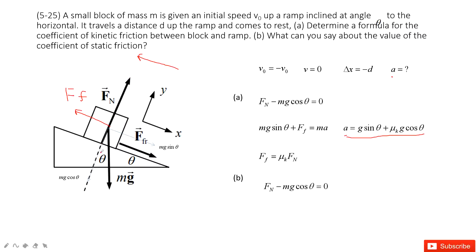In the Y component, we have N minus mg·cos(θ) equals zero. In the X component, we have mg·sin(θ) minus the static friction equals zero, because we need to keep the force balanced on the X component. So the static friction must act upward to balance mg·sin(θ). This friction is less than or equal to mu_s times the normal force. Solving this equation, we find that mu_s must be larger than tan(θ).